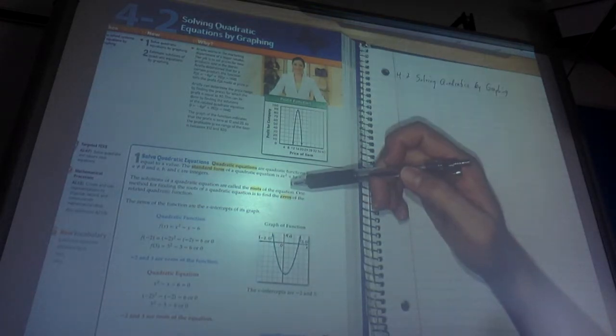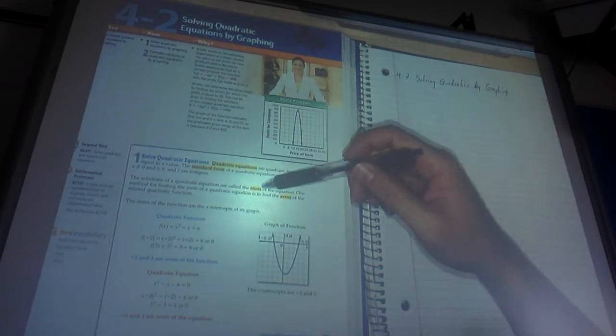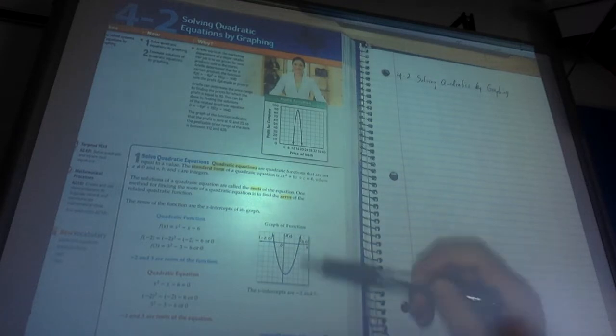We actually have two different names for those besides x-intercepts, so we can call them x-intercepts, or we can call them roots, or we can call them zeros. How you solve a quadratic equation is by finding the x-intercepts. It's really, really simple.